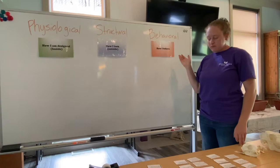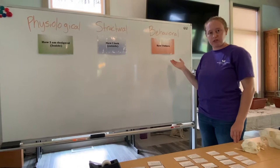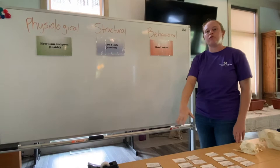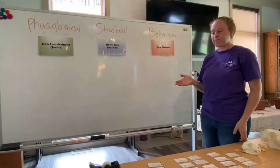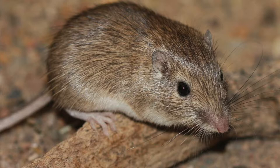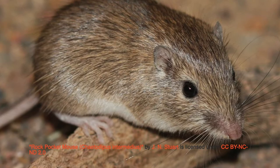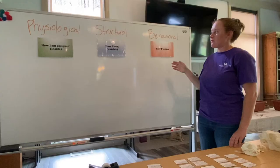For behavioral adaptations, one example is birds migrating south in the winter. As the weather gets cooler up north, they move to warmer temperatures so that they can mate and nest. Another example of a behavioral adaptation is a desert mouse that is more active at night when temperatures are cooler.